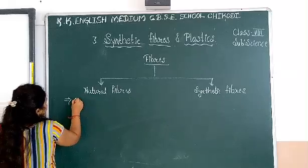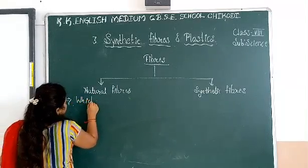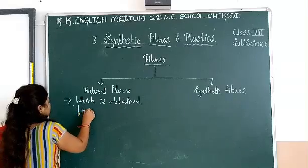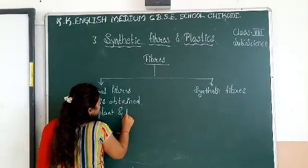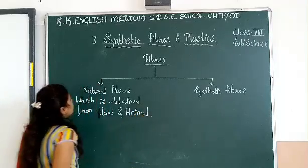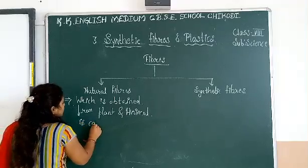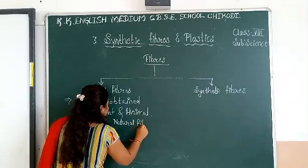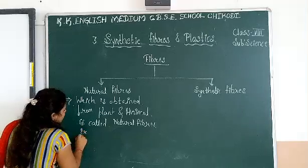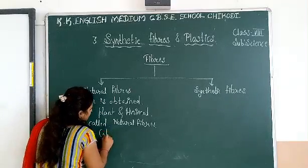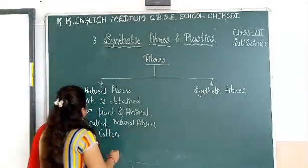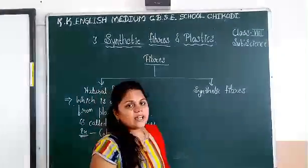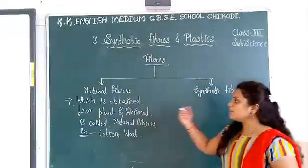Natural fibers are those which are obtained from plants and animals. Examples of natural fibers: cotton, which is obtained from plants, and wool, which is obtained from animals.